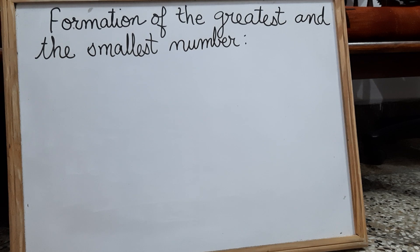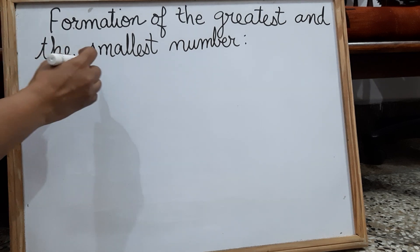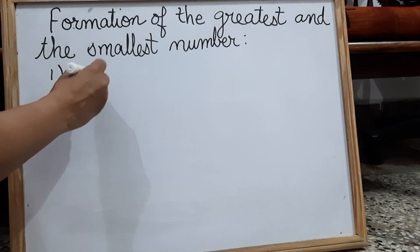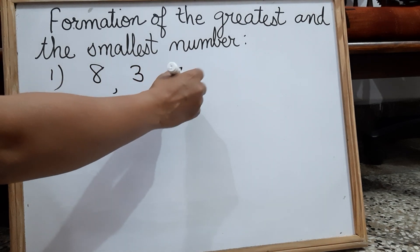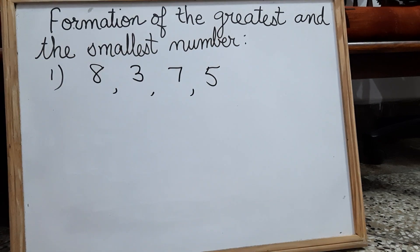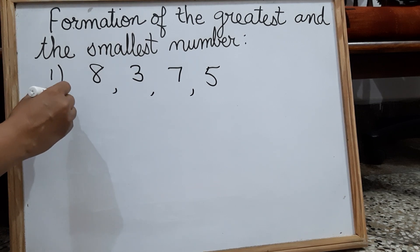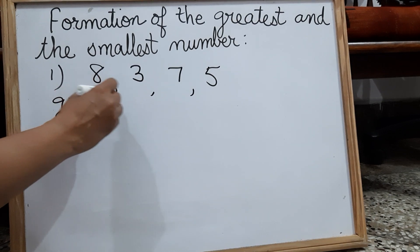I am taking one example with four digits: eight, three, seven, and five. We are going to form the greatest four digit number.